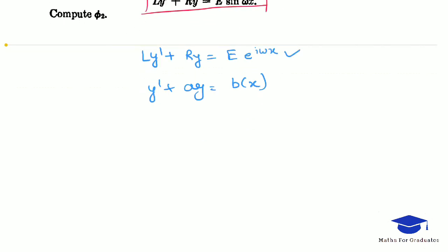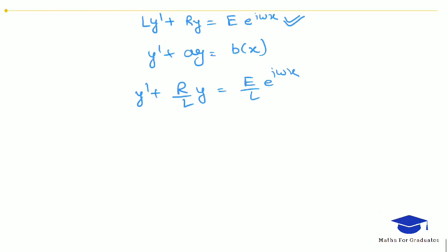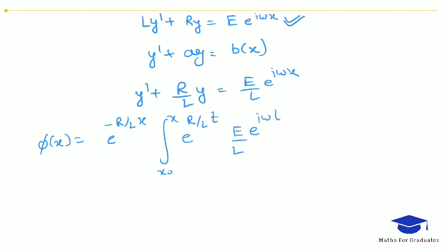The solution is φ(x) = e^(−r/L · x) times the integral from x₀ to x of e^(r/L · t)·(E/L)·e^(iωt) dt, plus c·e^(−r/L · x). Taking E/L outside the integral, the integrand becomes e^((r/L + iω)t).